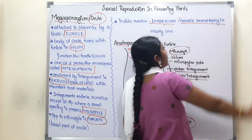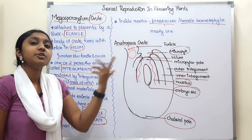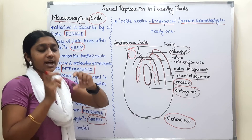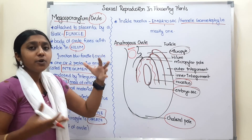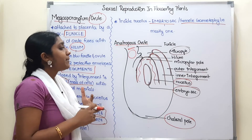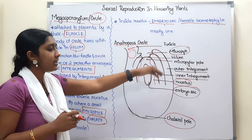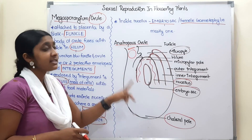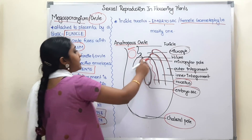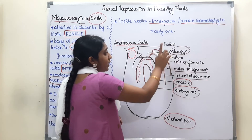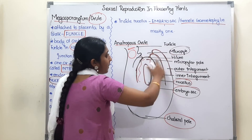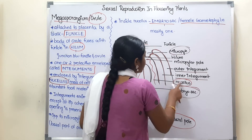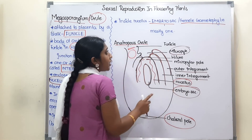The female gametophyte is mostly the embryo sac. Inside the nucellus there is the embryo sac. The outer integument and the inner integument enclose the mass of cells — the nucellus — which is covered by integuments except for the micropyle. The micropyle is called the micropylar pole, and the base portion of the ovule is called the chalaza pole. The nucellus contains the embryo sac, generally one per ovule.